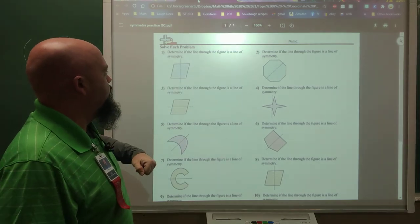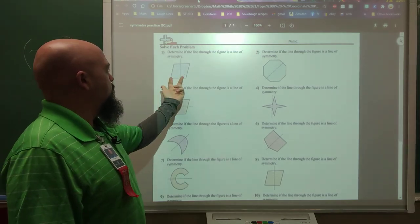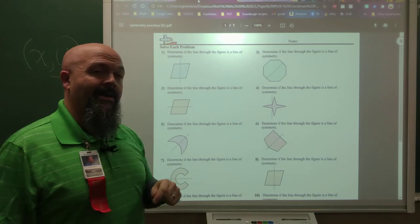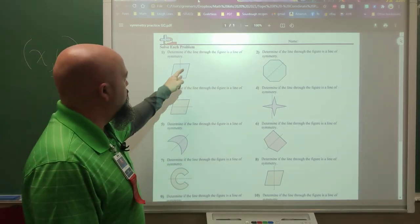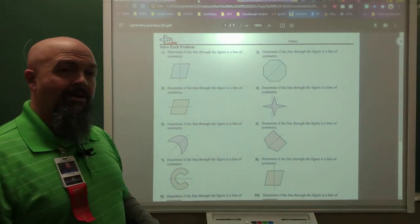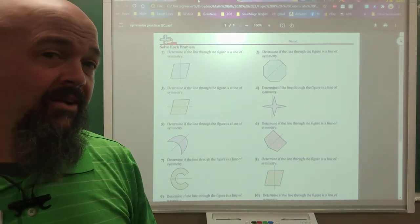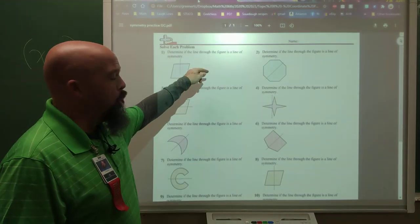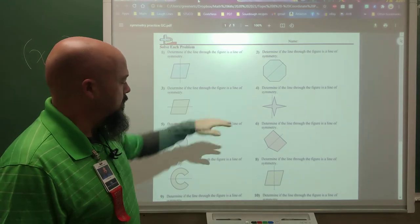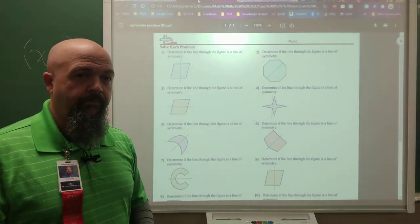Looking at number one. Well, if I were to take that and fold it where that line is, what's going to happen? This corner here and this corner here are not going to meet up, so it's not a line of symmetry. So that would be a no. And you move on along the rest of those the same way.